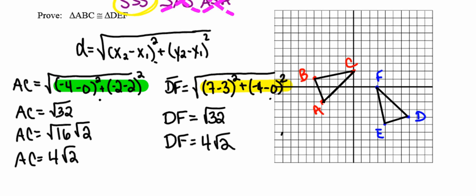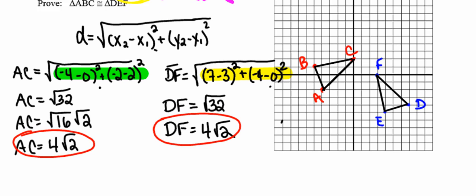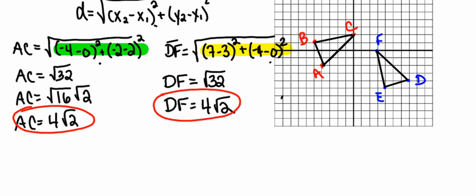Alright, so at this point I know the distance between points A and C is 4√2. I know the distance between points D and F is 4√2. There's one pair of sides in the first triangle, or one side in the first triangle congruent to one side in the second triangle. That's one pair of congruent sides. So now I'm going to go do the same thing for a second pair of sides.